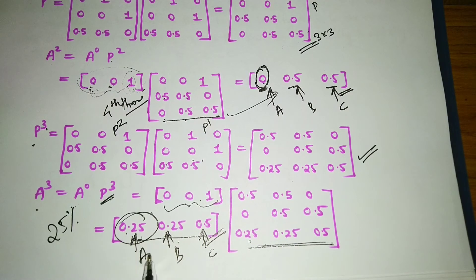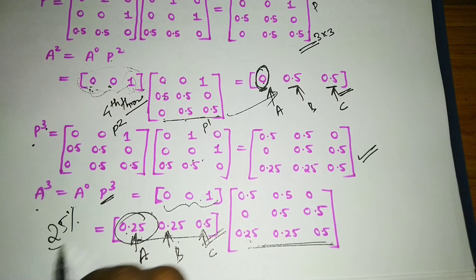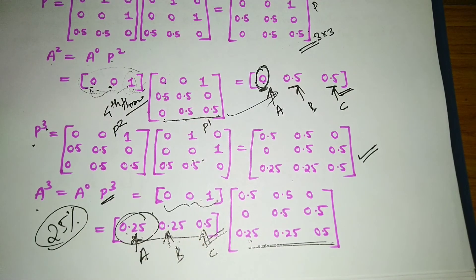The result gives: A's probability = 0.25, B's probability, and C's probability. So the probability that A has the ball after the fourth throw is 0.25, or 25 percent.